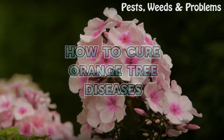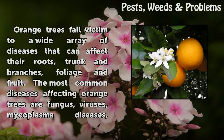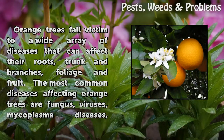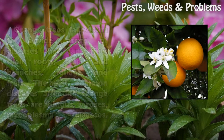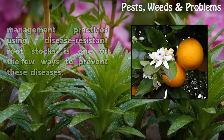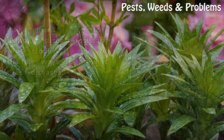Orange trees fall victim to a wide array of diseases that can affect their roots, trunk, branches, foliage, and fruit. The most common diseases affecting orange trees are fungus, viruses, mycoplasma diseases, nematode, and non-parasitic diseases. Each of these have few effective treatment options and usually require removal of infected trees to prevent the spread of disease. Good orchard management practices using disease-resistant root stocks is one of the few ways to prevent these diseases.